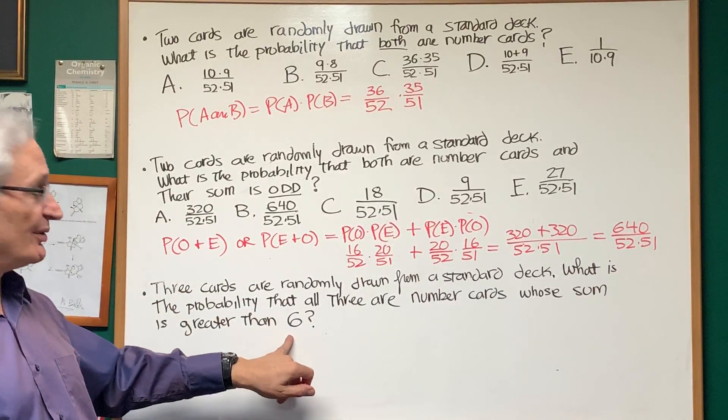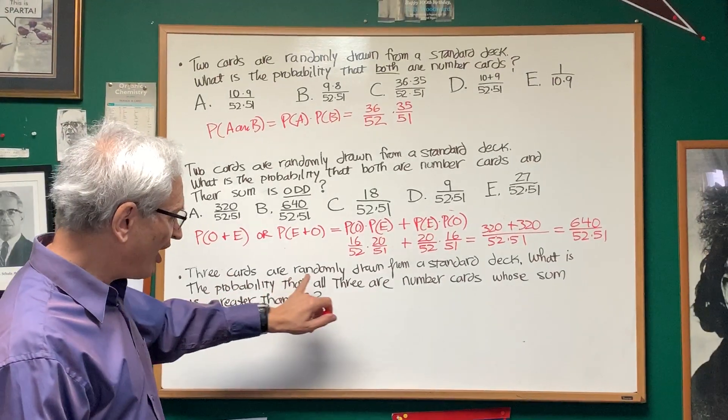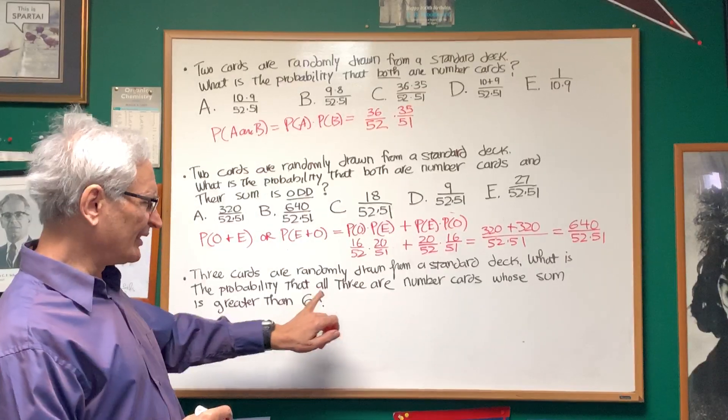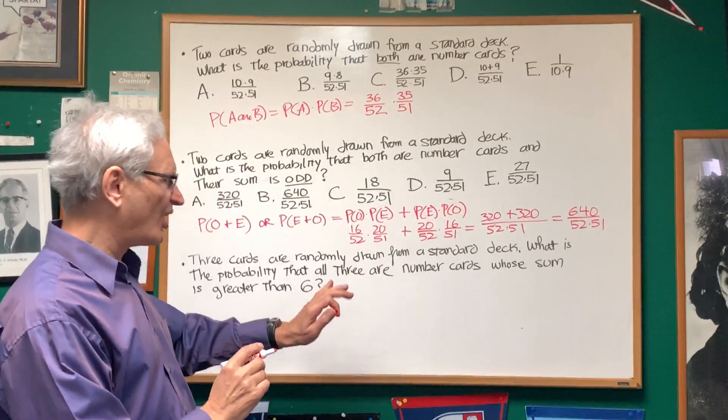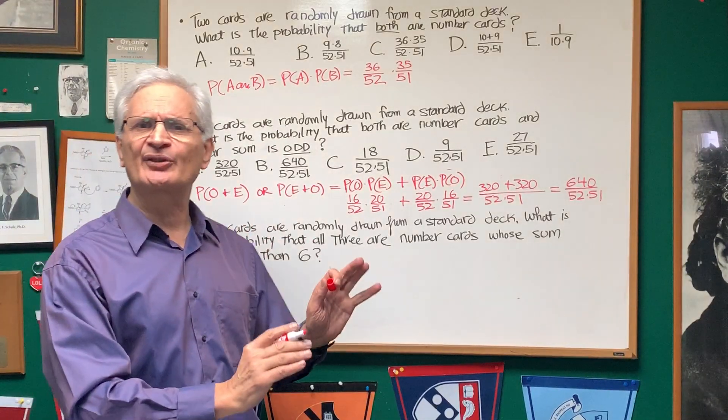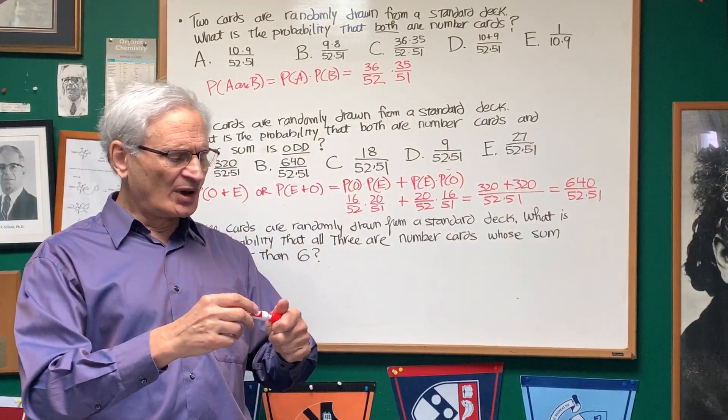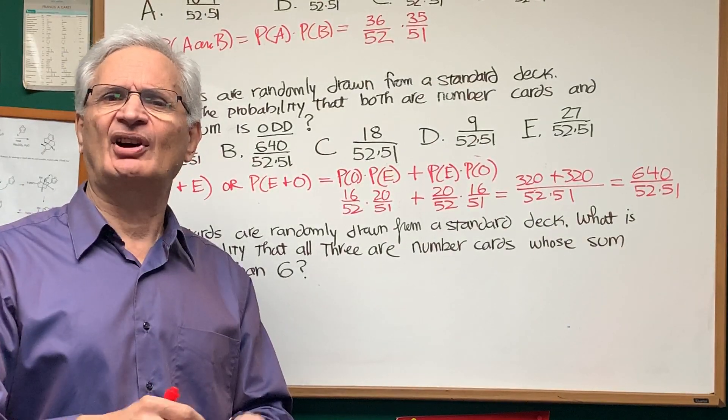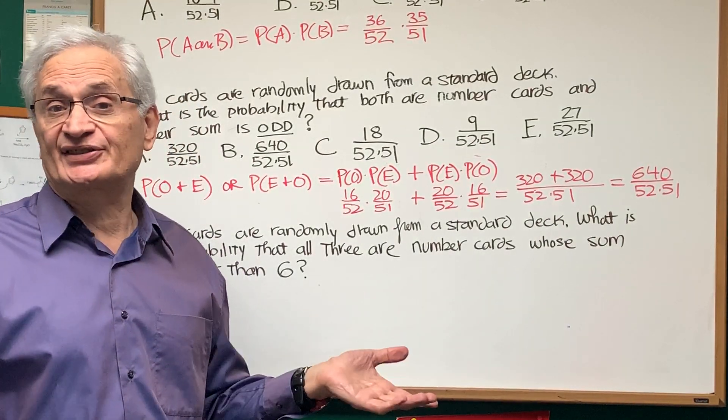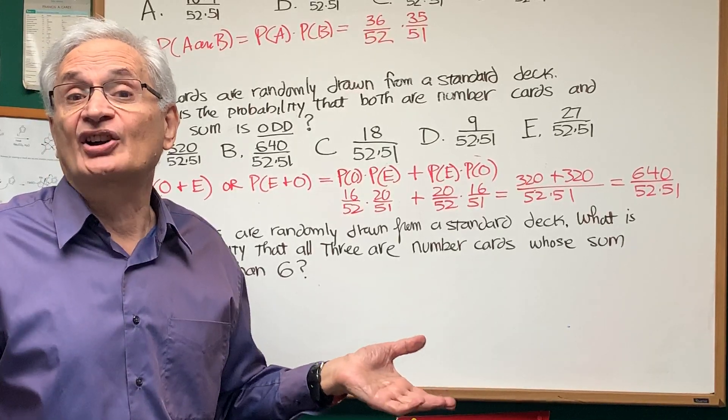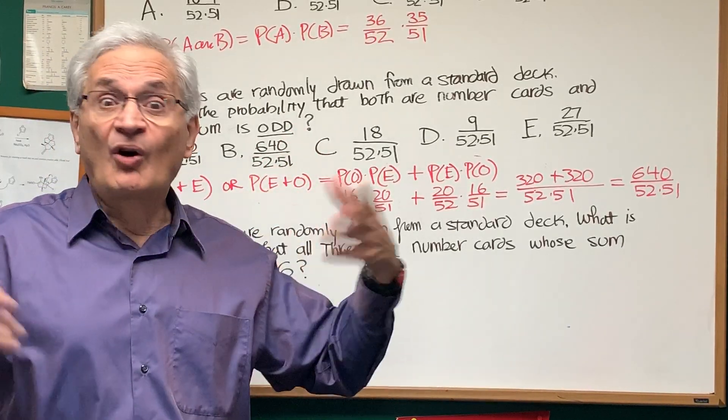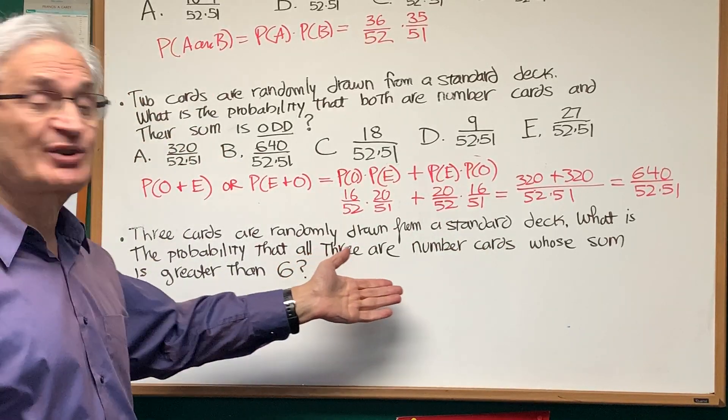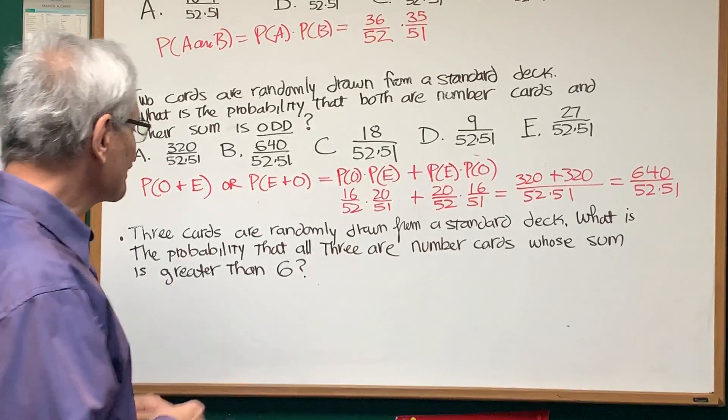Finally, let's go to the third problem here. Three cards are randomly chosen from a standard deck. What is the probability that all three are numbered cards whose sum is greater than 6? Okay. Well, there's only one instance of my picking three numbered cards where the sum is equal to or less than 6. And that's if all three cards are the number 2. All the other numbered cards are fair game for the description of what we are looking for in the outcome.